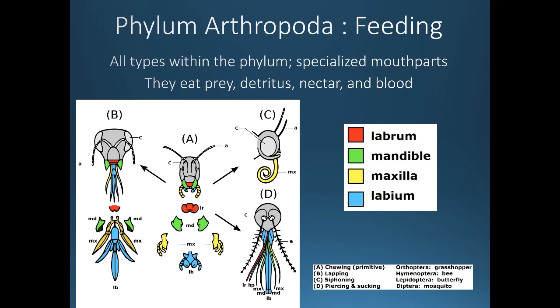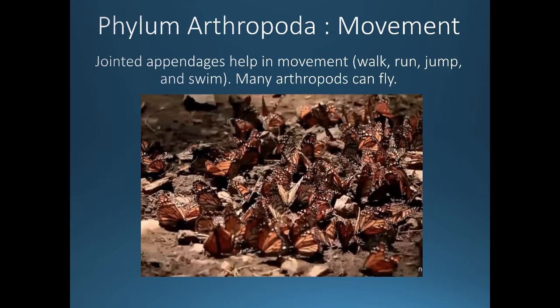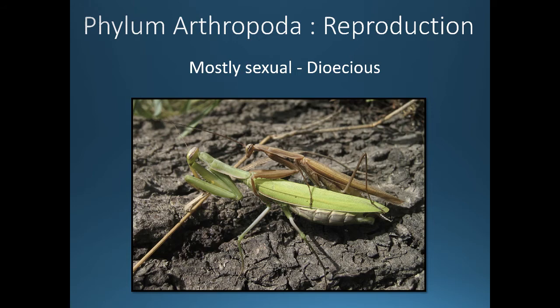All arthropods have specialized mouthparts. You should know four feeding methods: chewing, lapping, siphoning, or piercing and sucking. Depending on the species, they may feed on prey, detritus, nectar, or blood. Arthropods have a variety of ways to move using their jointed appendages — walking, running, jumping, swimming — and many can also fly. They reproduce mostly sexually and in most cases are dioecious.